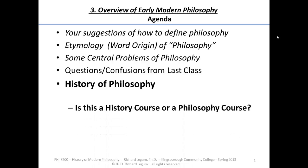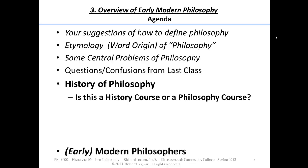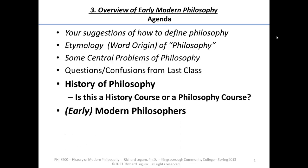Today I want to start talking about the history of philosophy. There's a confusion for students who are new to philosophy: we call this course history of modern philosophy. Students who have taken history courses like American history wonder — is it a history course? Or is it a philosophy course? What's the difference between the two, or are they the same thing?